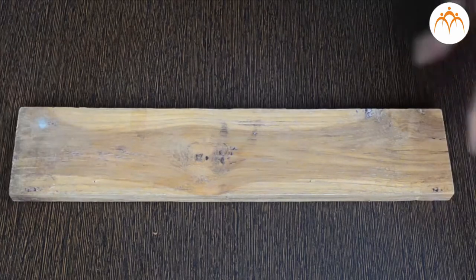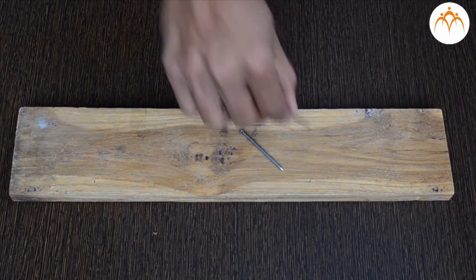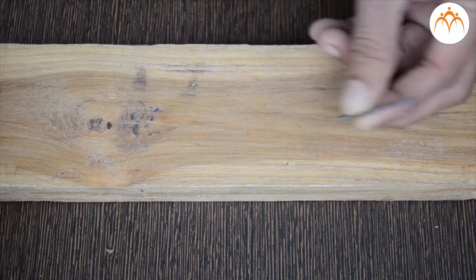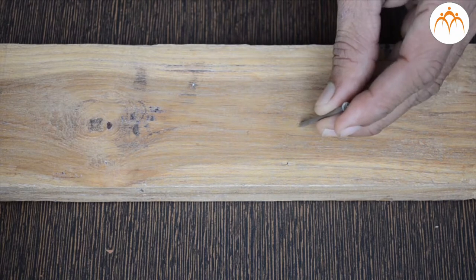I have two nails. One with a pointed end and one with a blunt end. Which one should I hammer into the wooden block? If I use this blunt nail and try to hammer it, it won't go very far.